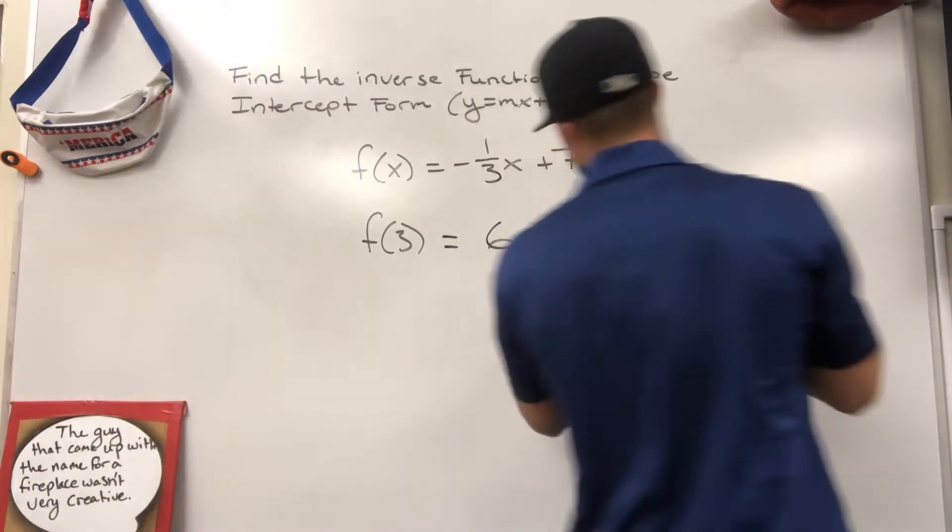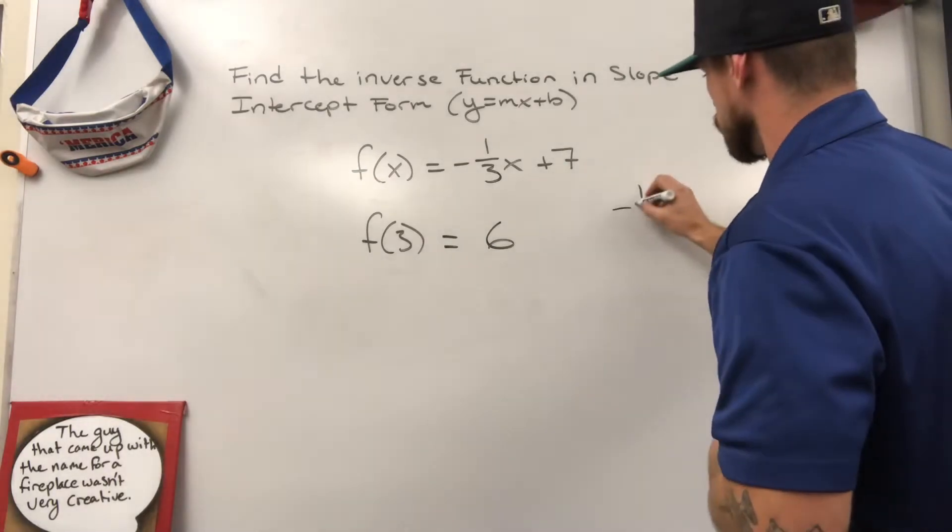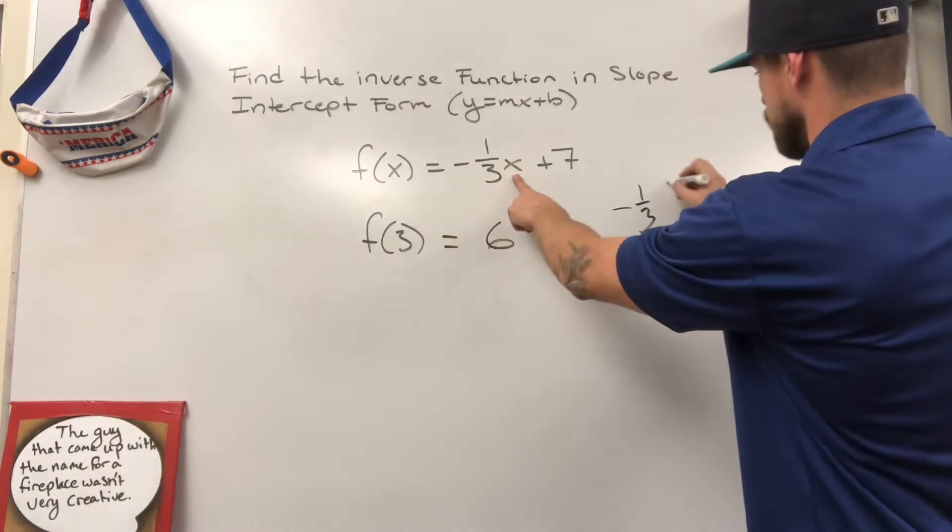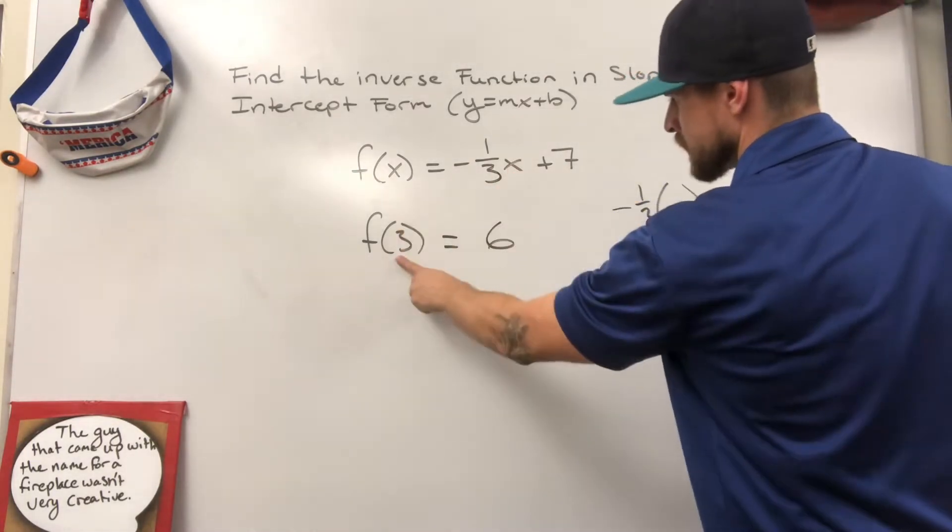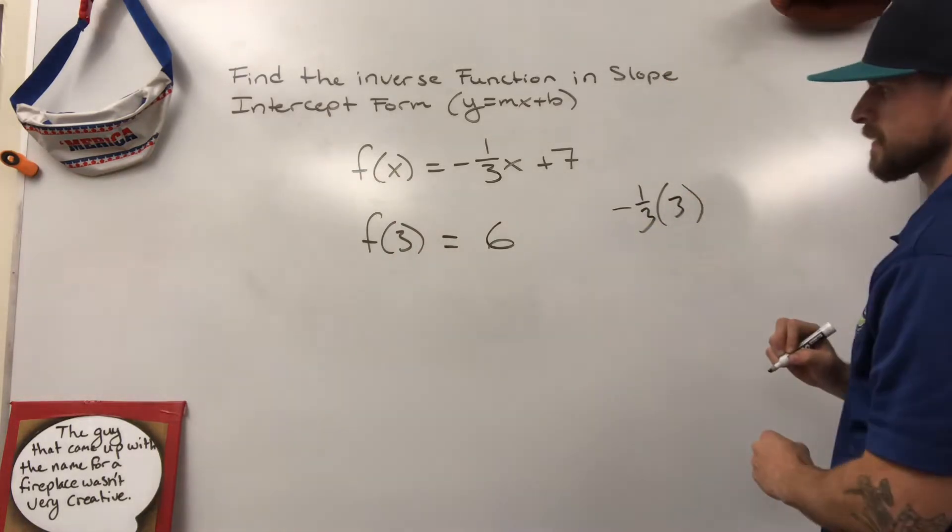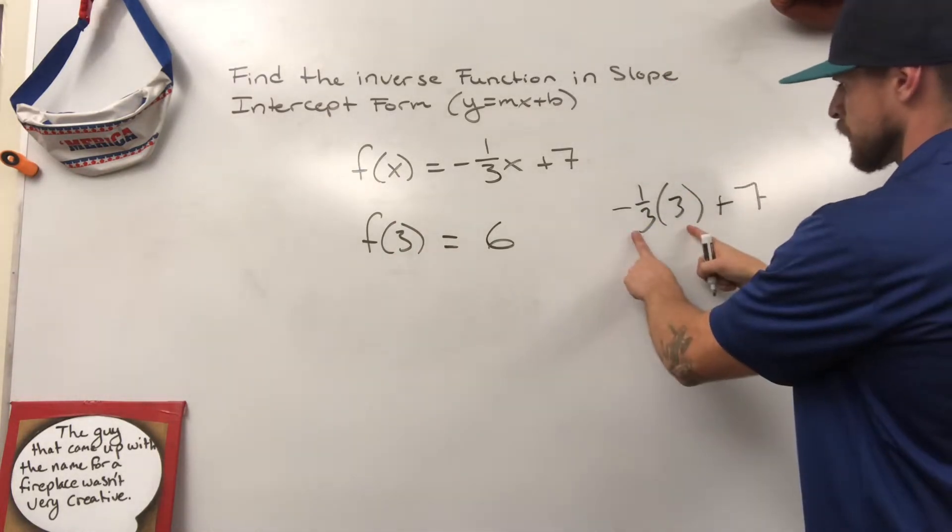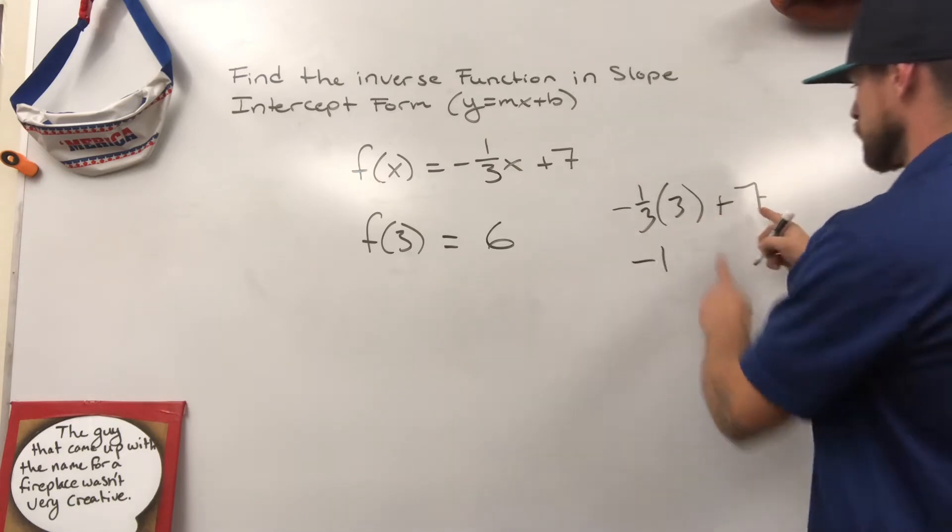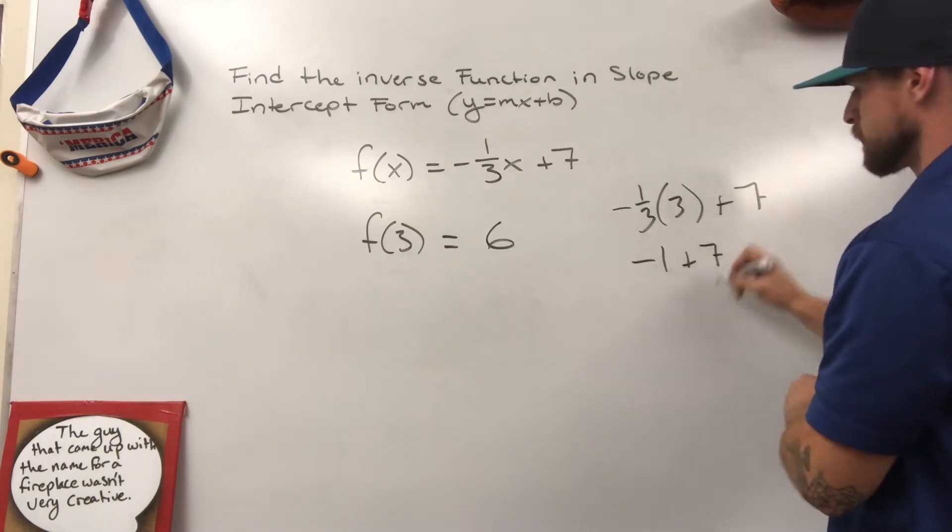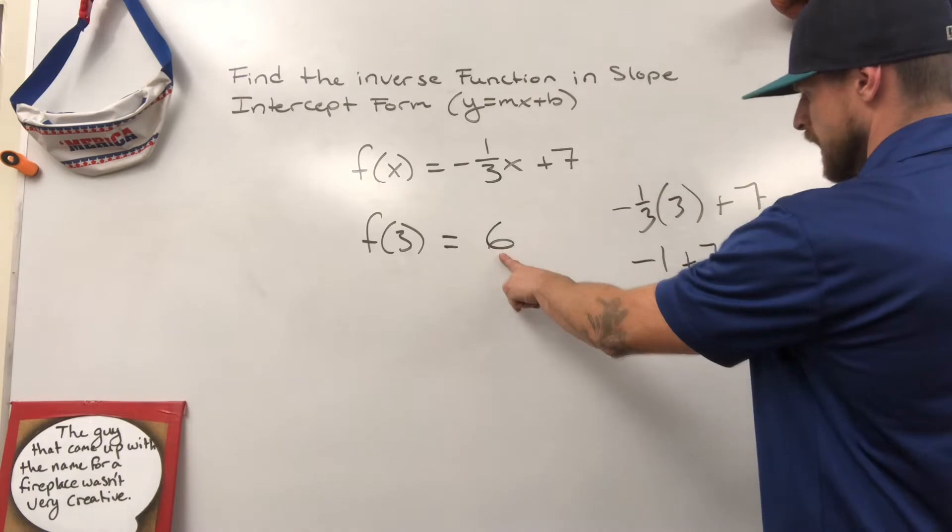I'll show you why real quick, just in case you're wondering. Negative one-third times x. Remember our x here is a three in this case, plus seven. Negative one-third times three is negative one, plus seven gives me six, my output.